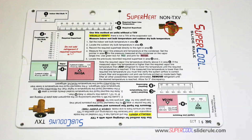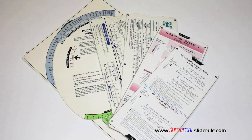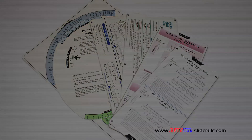I'd like to take a minute to introduce you to the coolest tool in the HVAC industry. Historically, technicians have carried four or five different slide rules — one for R22, one for R410A, one for metal duct sizing, one for flexible duct sizing, and yet others for diagnostics or troubleshooting.